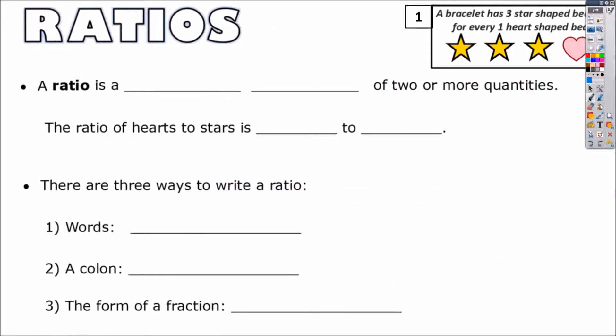A ratio is a multiplicative comparison of two or more quantities. If you look up here in this little box, we have a bracelet that has three star-shaped beads for every one heart-shaped bead. So we're comparing hearts and stars. Every time you see those words, you need to put those numbers. For example, I see right here where it says the ratio of hearts. How many are there? One. And to stars. How many stars? There are three. That's a ratio.